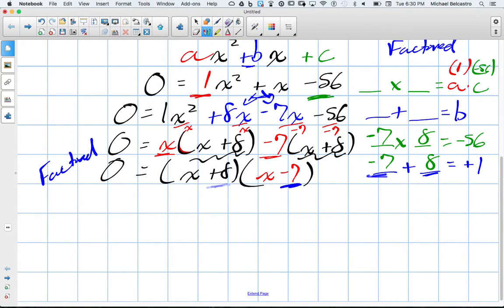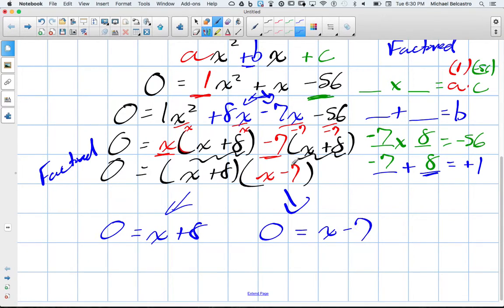We still don't have an answer, though. We still need to know what x is equal to. When you think about this, think of this as a term times another term. In order to multiply something by another number and get 0, one of them has to be 0. So we need to split this: zero is equal to x plus 8, or zero is equal to x minus 7. One of these terms must be 0 in order to create a 0. So these are the two possible answers.